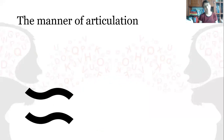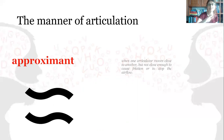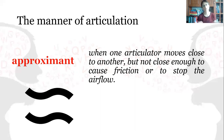And what about this picture? This is how I introduce the approximants in English. This is when one articulator moves close to another but not close enough to cause friction or to stop the airflow. There are three approximants in English.